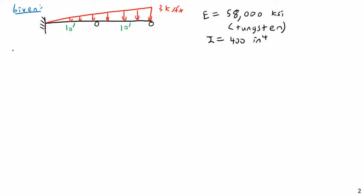For some reason we've decided to build a 20-foot-long statically indeterminate tungsten beam — incredibly expensive and hard to manufacture, but here we are. This beam has a moment of inertia of 400 inches to the fourth power. We know the spans, the load, the modulus of elasticity, and the moment of inertia — all the important things.